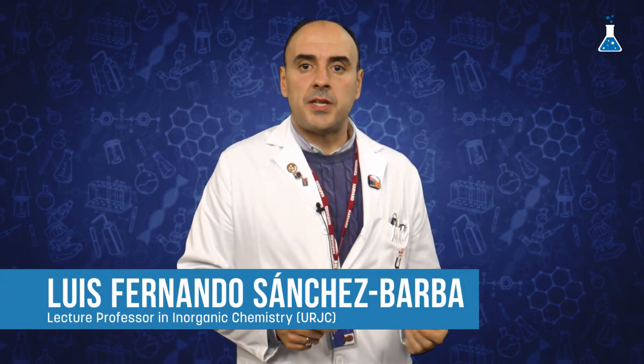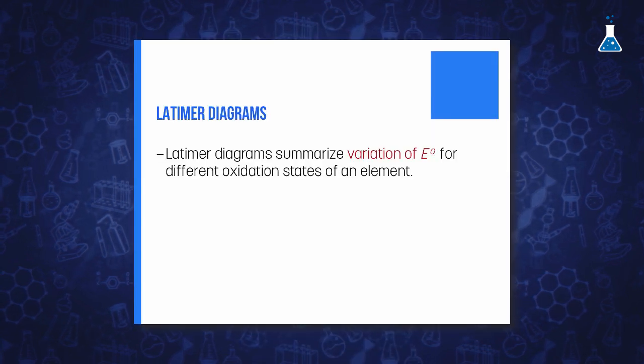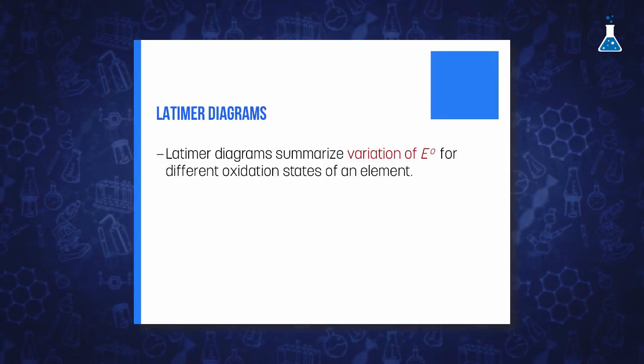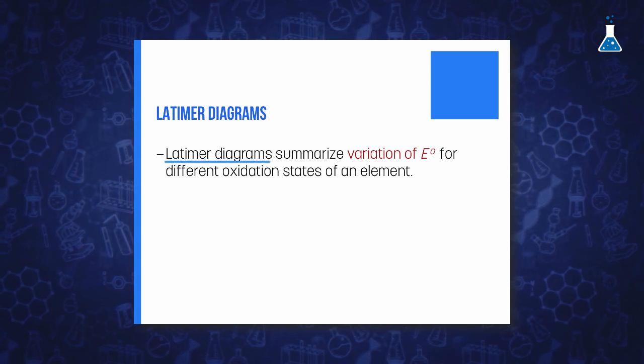A convenient way to visualize the different instabilities of the diversification states of an element is to summarize the standard reduction potential data in a reduction potential diagram, or what is known as a Latimer diagram.